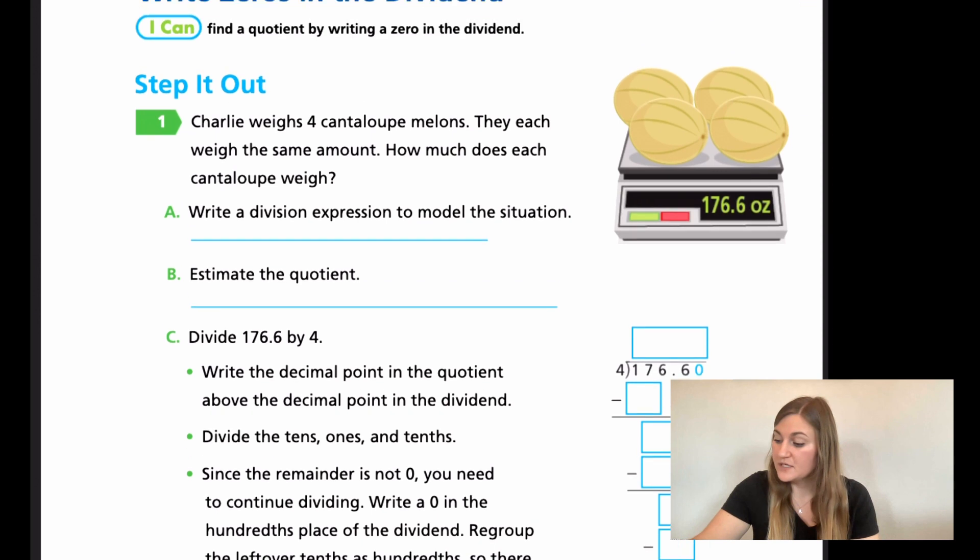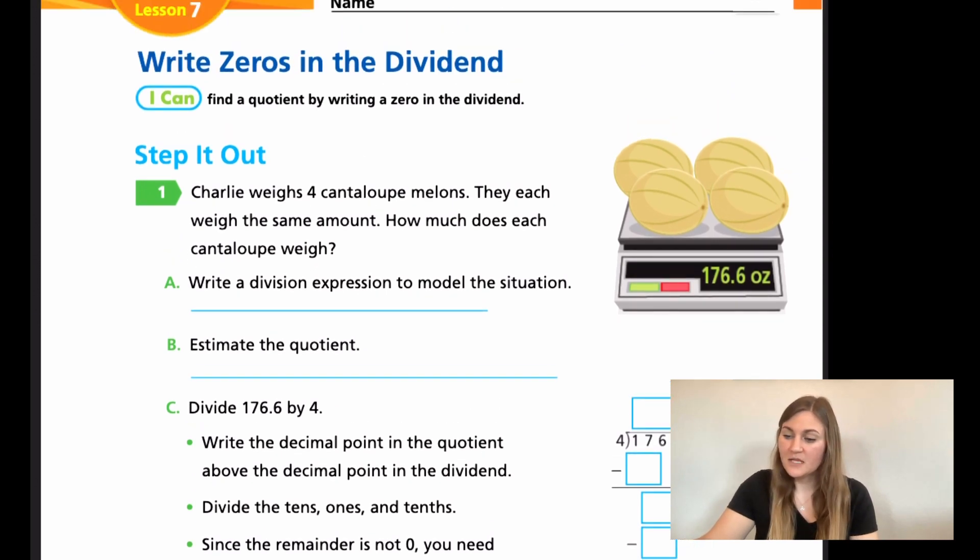Moving into the lesson, we're on page 447. We have a step it out number one that says Charlie weighs four cantaloupe melons. They each weigh the same amount, so how much does each cantaloupe weigh? If you look over at the picture, the weight shows us that it's 176.6 and there are one, two, three, four melons total. For A, we want to write a division expression to model the situation. So we want to take our total weight of 176.6 and we want to divide it by the four melons.